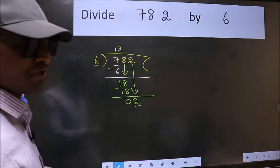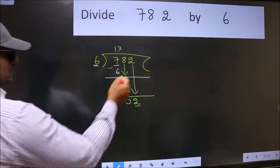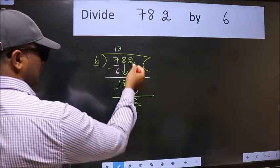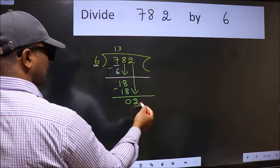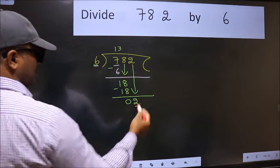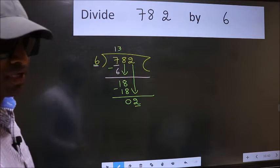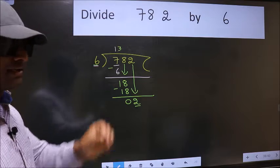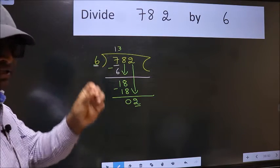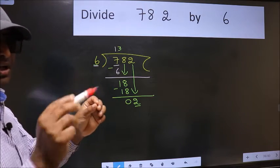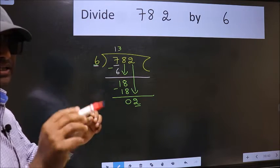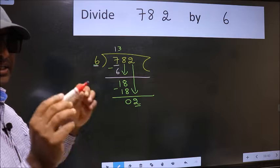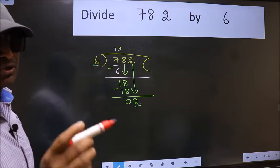Why is it wrong? Because just now you brought this number down. And in the same step, you want to put dot take 0. Which is wrong. I repeat. Bring down the number and also put dot take 0. Both at the same step. You should not do.